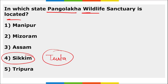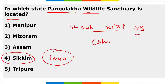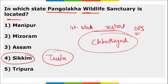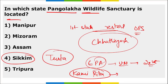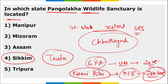Pangolakha Wildlife Sanctuary is located in Sikkim. The Teesta River is also in Sikkim. Chhattisgarh became the first state to restore the old pension scheme. Kami Rita scaled Mount Everest for a record 26th time.